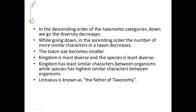But let's talk about species. Species is Homo sapiens — human beings. They are one species. There is no diversity because human beings are almost similar. Now let's talk about the primate order. In primates, we have gorillas, monkeys, and human beings with similar characteristics, but there is also diversity. This means that in the descending order of taxonomic categories, as we go down, the diversity decreases.